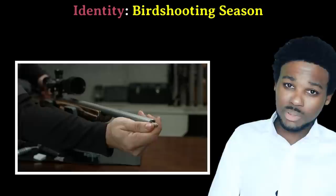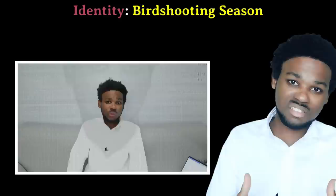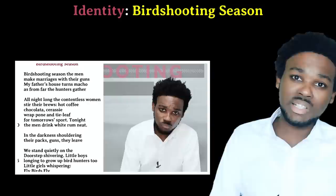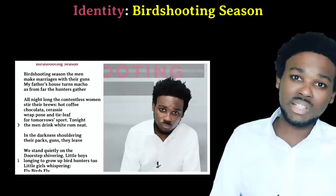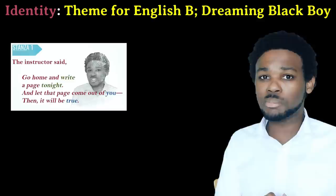In Bird Shooting Season, identity is explored through the lens of gender. What does it mean to be a man, to be a woman? Men are hunters and gatherers, while women stay in the kitchen. We see how the children in the poem see their identities as roles they must grow into — shoes to be filled. The boys will one day become men and hunt birds, while the girls will eventually become women. The women in the poem are apparently trapped in this gender role, in this limited and predefined identity.